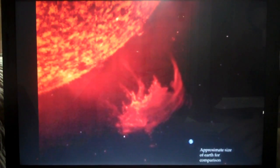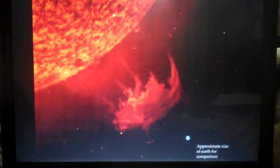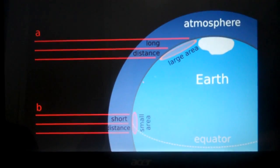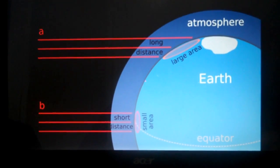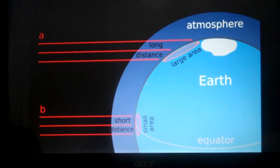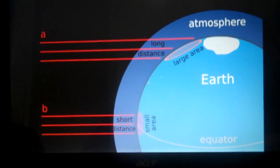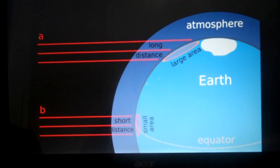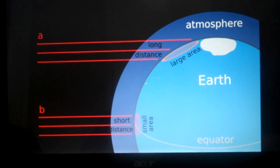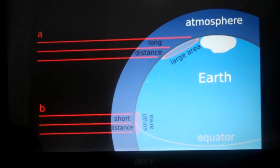Since the Earth is round, the energy brought in by these rays is not distributed evenly across the surface. At the equator, each ray of Sun is distributed over a small area because they are hitting the Earth's surface at a 90 degree angle. At the poles, each ray of Sun is distributed over a larger area because they are hitting the Earth's surface at somewhere between a 45 degree angle and 0 degree angle.